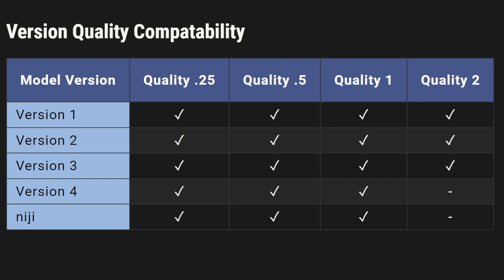In versions 4 and Niji mode, only the first three quality levels will matter — quality 2 isn't compatible. In version 3, you can use quality 2. Also, if you're using a higher quality than what your current version is compatible with, it won't waste your GPU time — it'll simply downgrade to the highest compatible quality for that version.